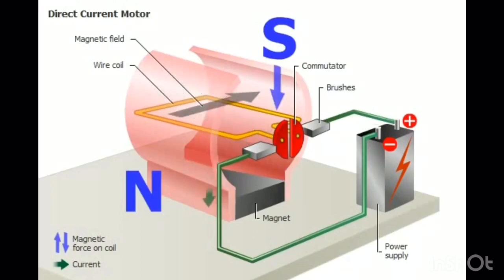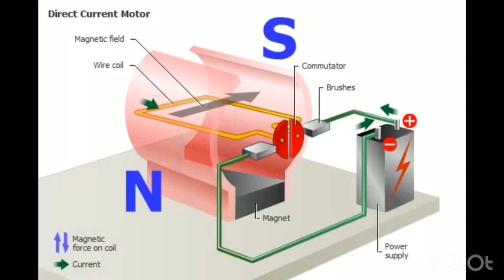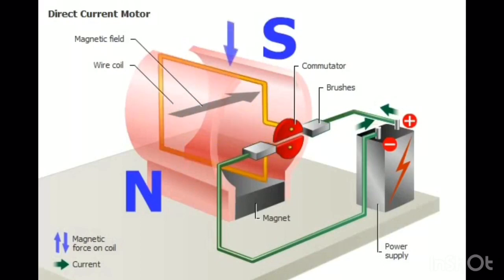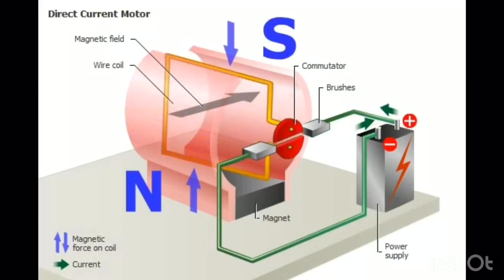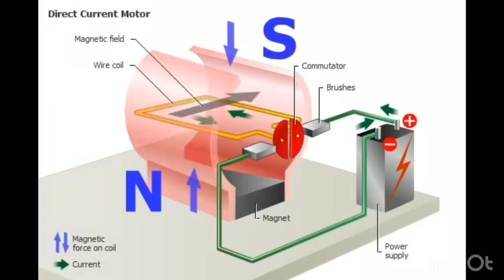the segment of wire near the south magnetic pole is pushed downward by the magnet. The segment near the north magnetic pole is pushed upward. In this way, the magnet causes the armature to turn. After each half turn, the commutator reverses the current. Forces on the coil reverse and the turn is complete. The cycle repeats, making the movement continuous.